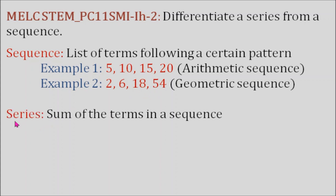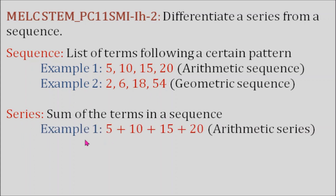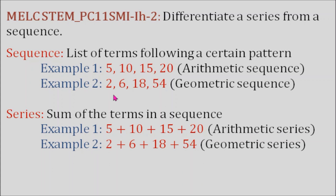A series is the sum of the terms in a sequence. So for example, if the terms are 5, 10, 15, and 20 and we add them up — 5 plus 10 plus 15 plus 20 — we now call it an arithmetic series. Another example: if the terms are 2, 6, 18, and 54, and we add them — 2 plus 6 plus 18 plus 54 — this becomes a geometric series.